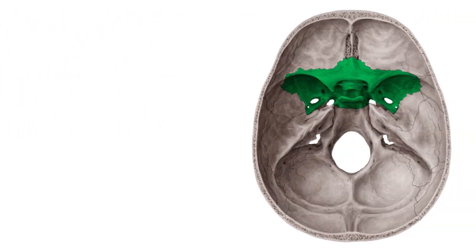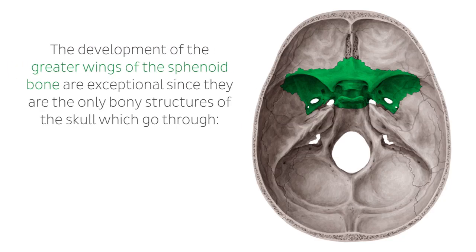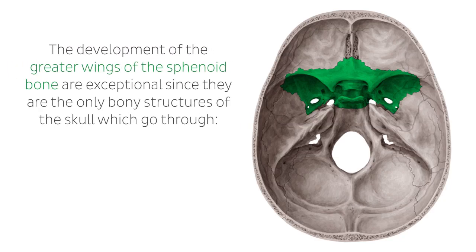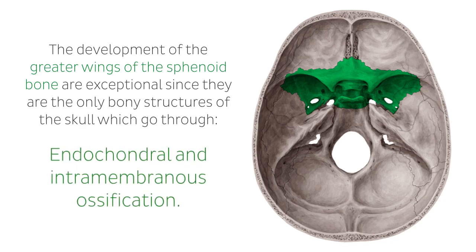The body and lesser wings of the sphenoid bone mature through classic endochondral ossification, whereas the pterygoid processes undergo intramembranous ossification. The development of the greater wings of the sphenoid bone are exceptional since they are the only bony structures of the skull which go through both endochondral and intramembranous ossification.